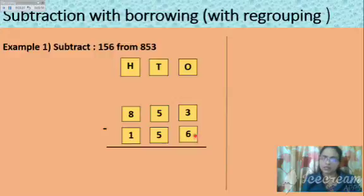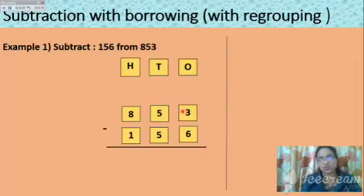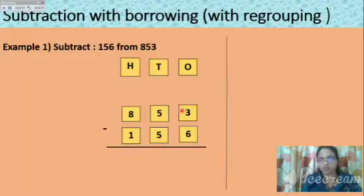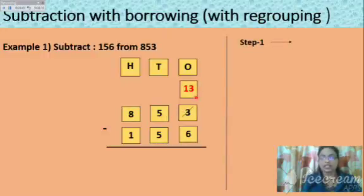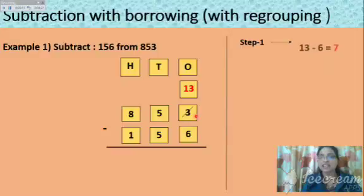Can you subtract 6 from 3? No — 3 is the smaller number. So we need to borrow from the neighbor, which is the tens place. After borrowing, how much do you get in the ones place? 13. Now you can subtract 6 from 13: 13 minus 6 is 7. So the answer in the ones place is 7.